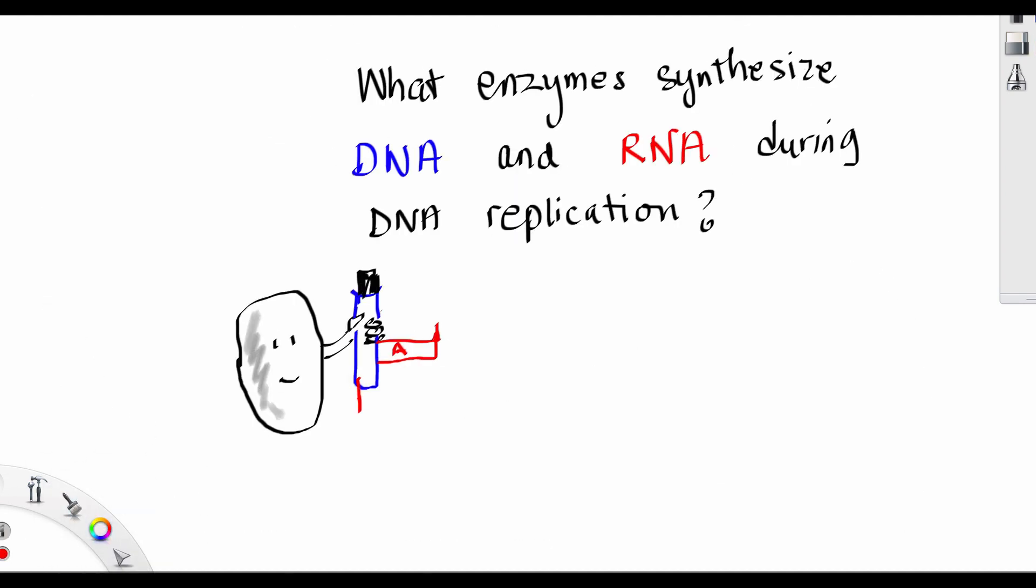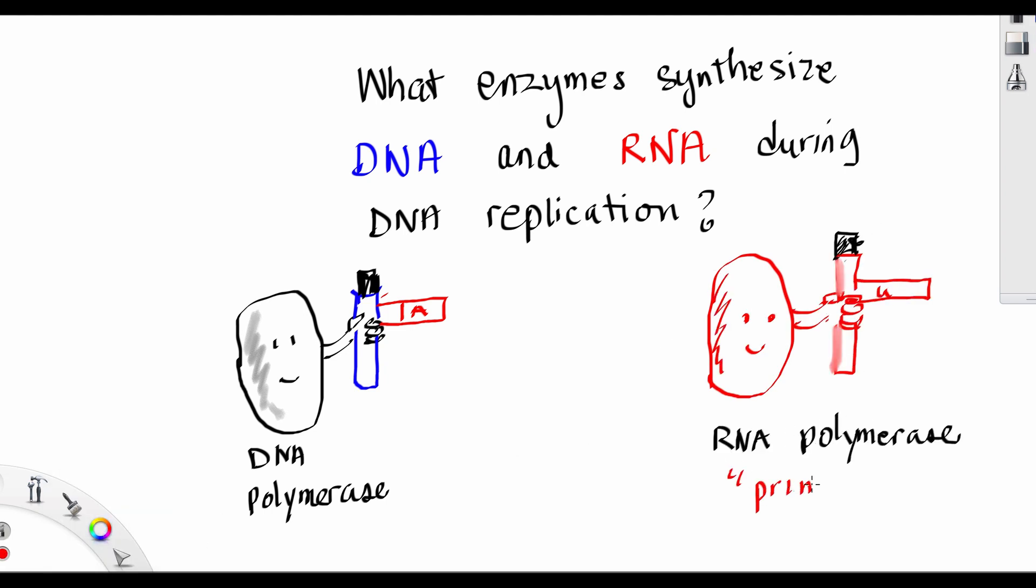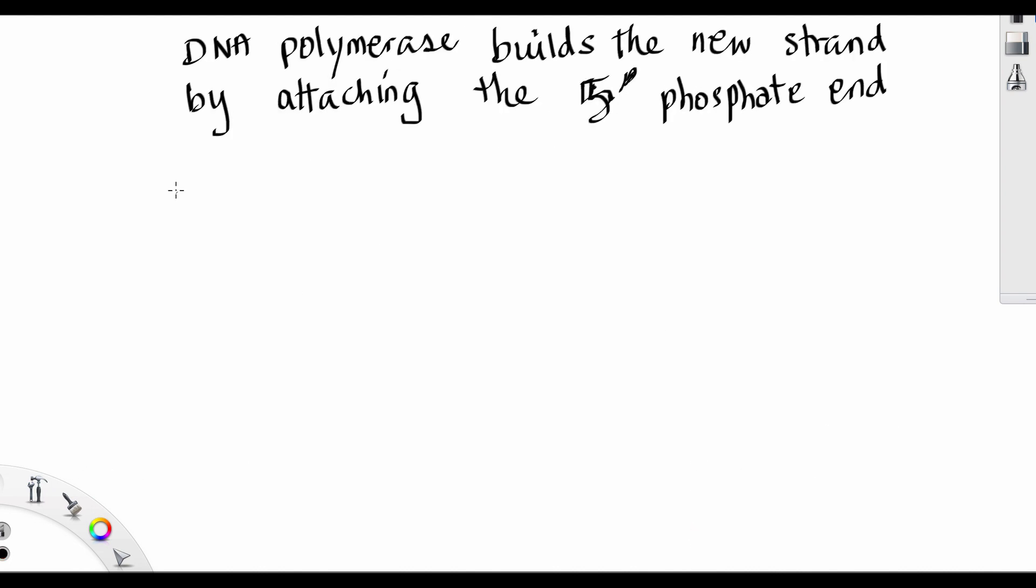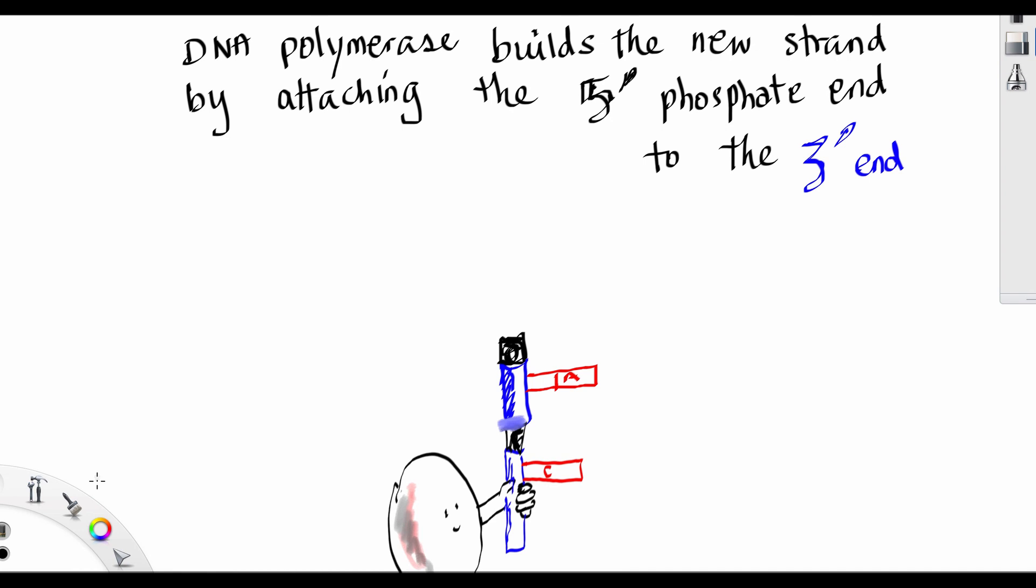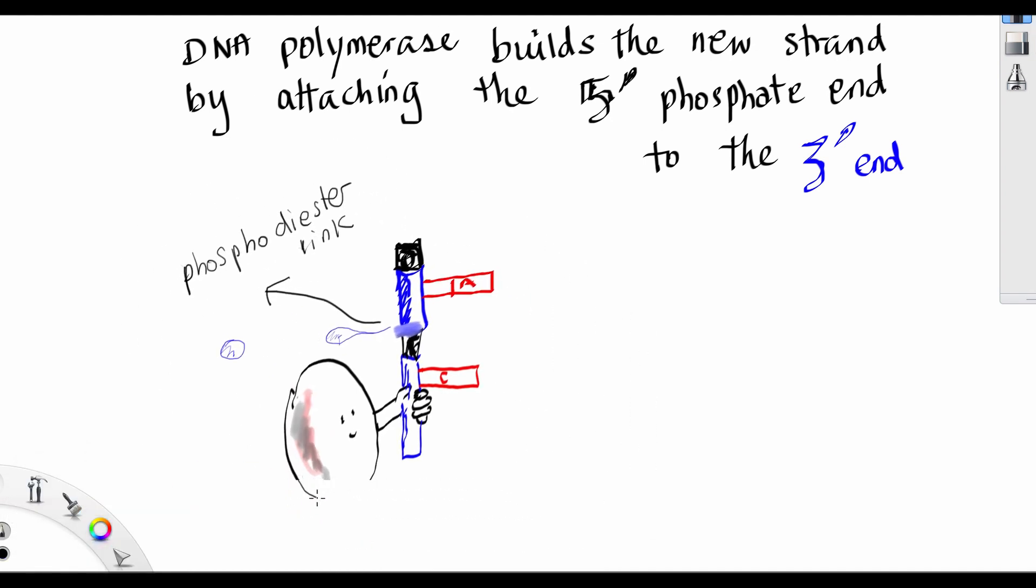What enzymes synthesize DNA and RNA during DNA replication? It's DNA polymerase and RNA polymerase. The RNA polymerase's name is primase. DNA polymerase builds the new strand by attaching the 5' phosphate end to the 3' end, and it makes a phosphodiester link.